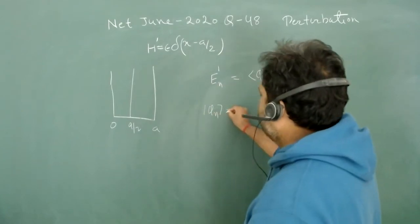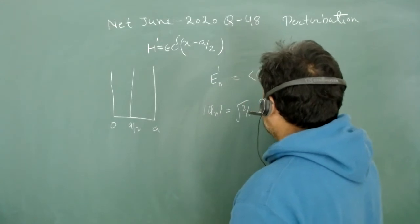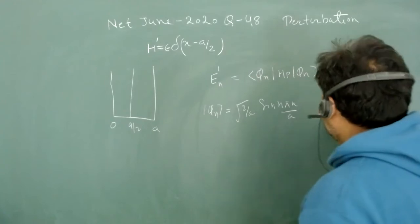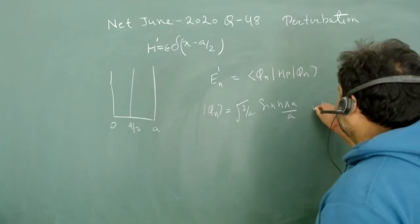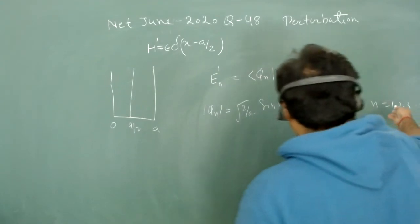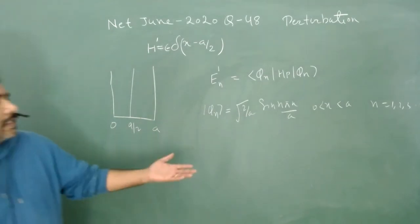And it is nothing but root(2/a) sin(n*pi*x/a), where x is between 0 to a, and n equals 1, 2, 3, and so on. N equals 1 is for the ground state, and n equals 2 for the first excited state.